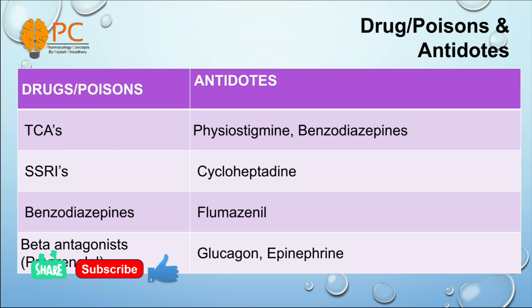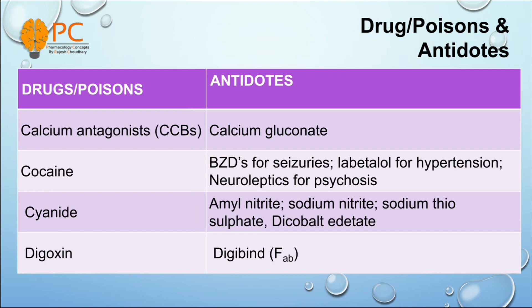For the overdose of benzodiazepines, we can use flumazenil as antidote. Flumazenil is basically a benzodiazepine receptor antagonist. And for beta receptor antagonist propranolol overdose, we can use glucagon or epinephrine as antidote. And for calcium channel blocker overdose, we can use calcium gluconate as antidote.